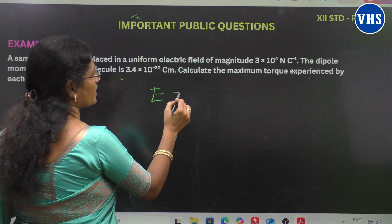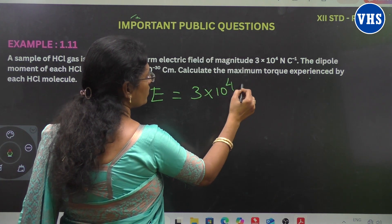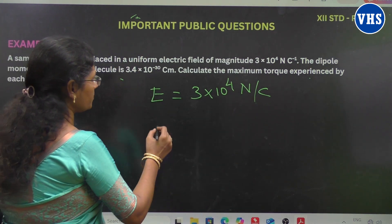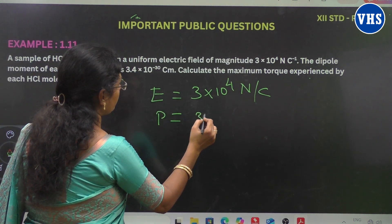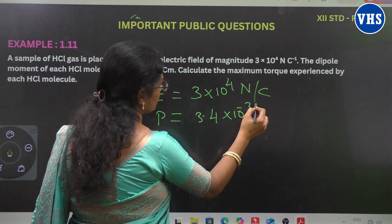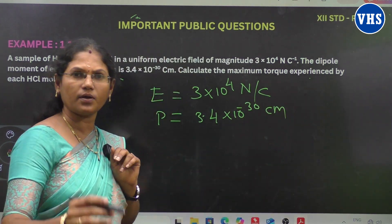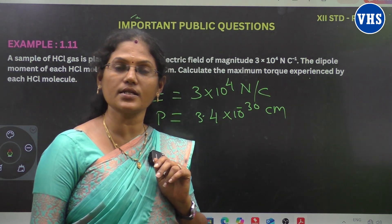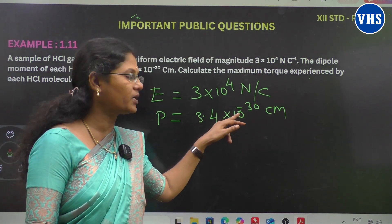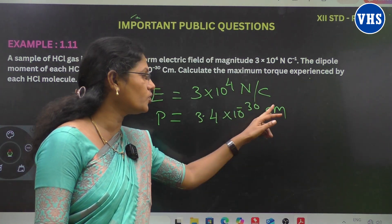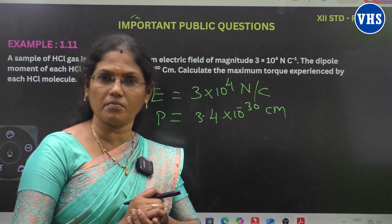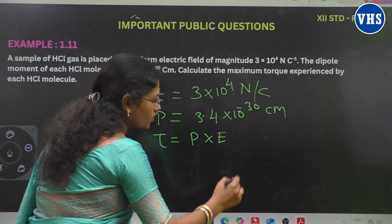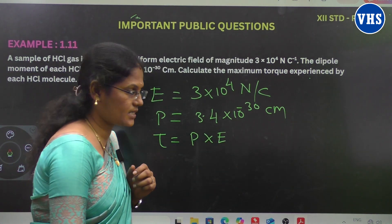The given data: Electric field E is equal to 3 × 10⁴ Newton per Coulomb. The next given data is the dipole moment — that is 3.4 × 10⁻³⁰ Coulomb meter. You know very well what a dipole moment is: two equal and opposite charges separated by a small distance 2a. So the P value is 3.4 × 10⁻³⁰ Coulomb meter. Now, what is the torque formula?